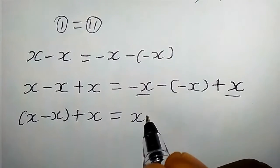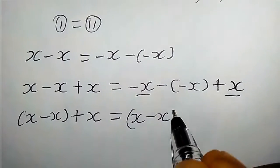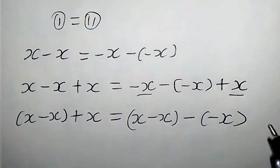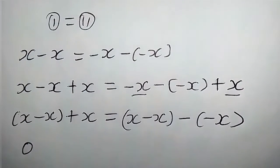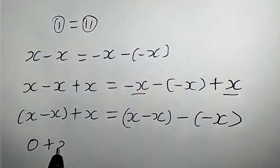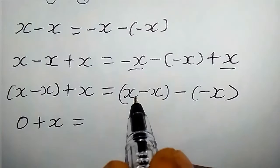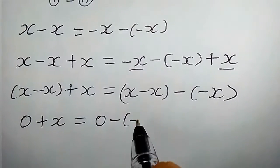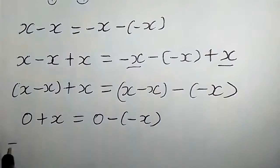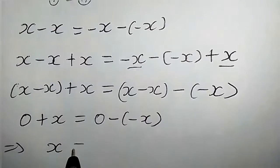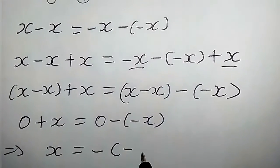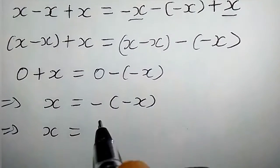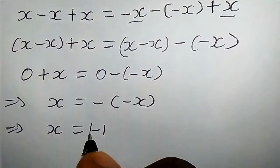We're going to have x minus x plus x, which equals x minus bracket x into bracket minus into minus x. Of course x minus x equals 0, so we have 0 plus x, which equals x minus x — that is 0 — minus into minus x. This implies that x equals minus into minus x.